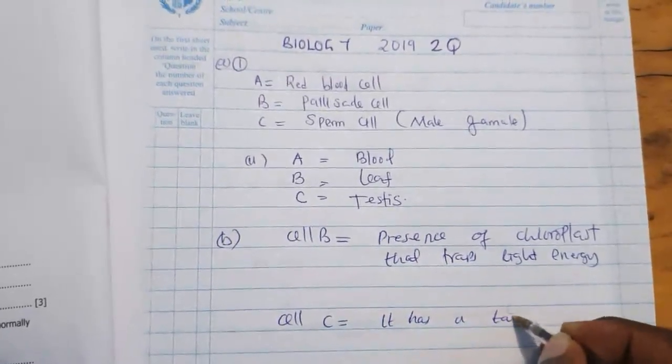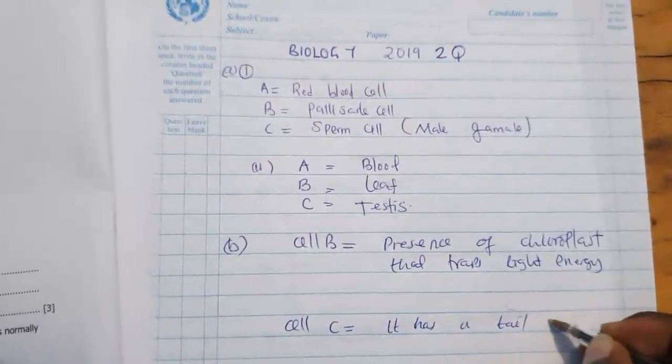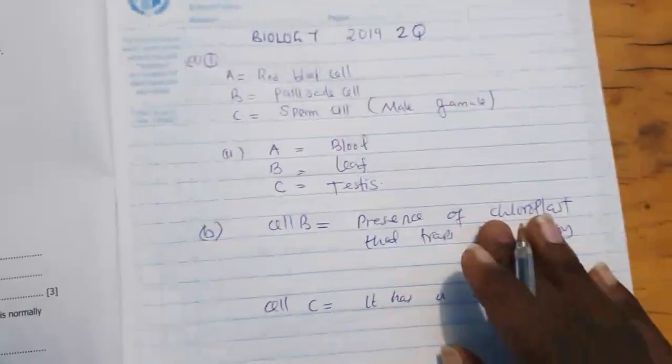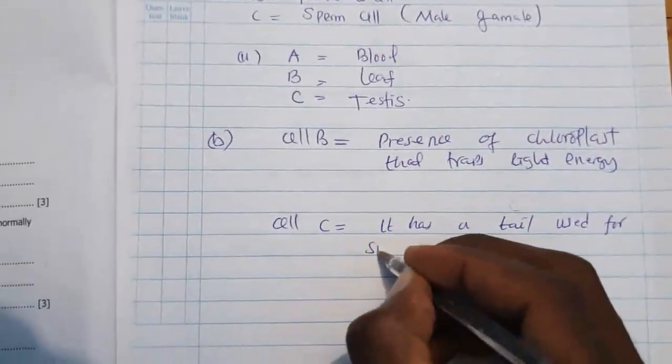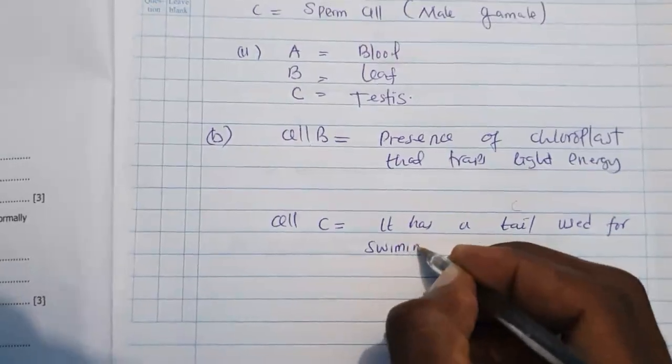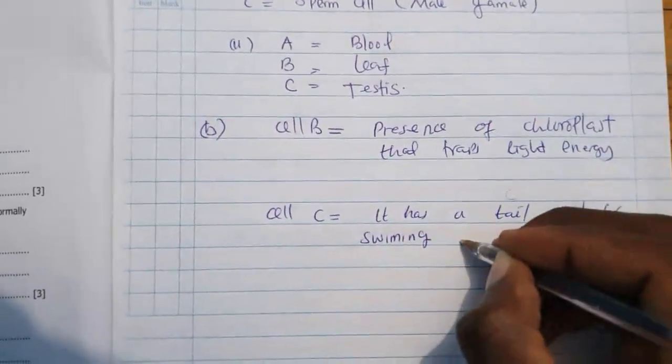Then cell C, which is a sperm cell, it has a tail used for swimming.